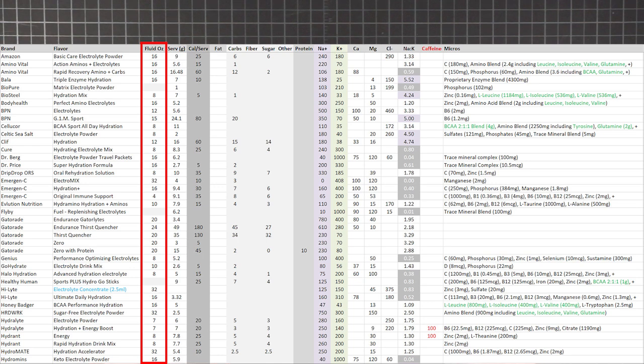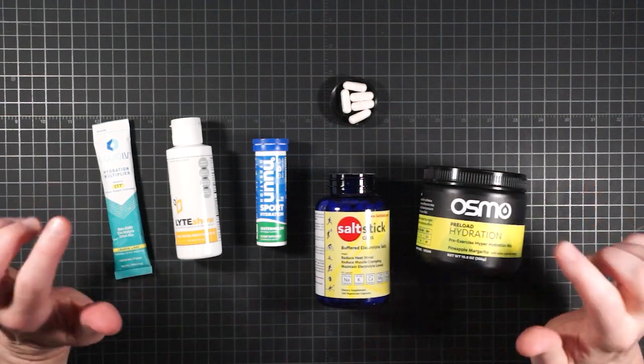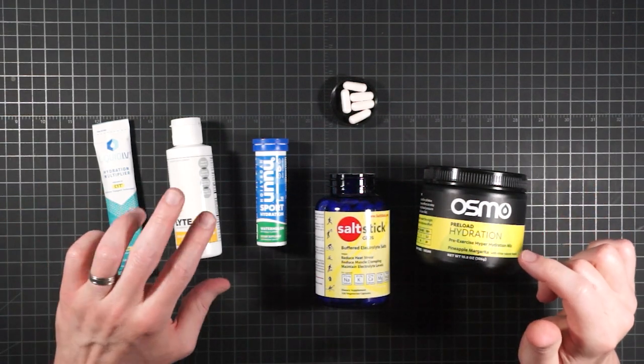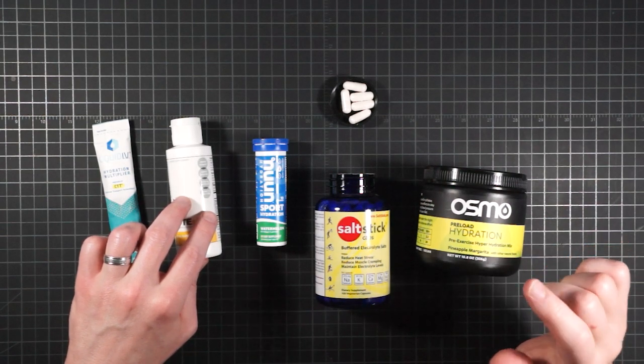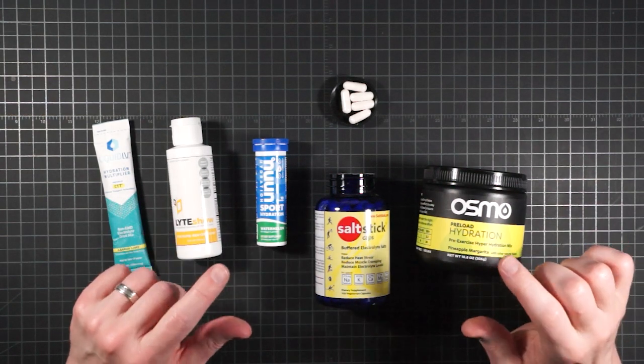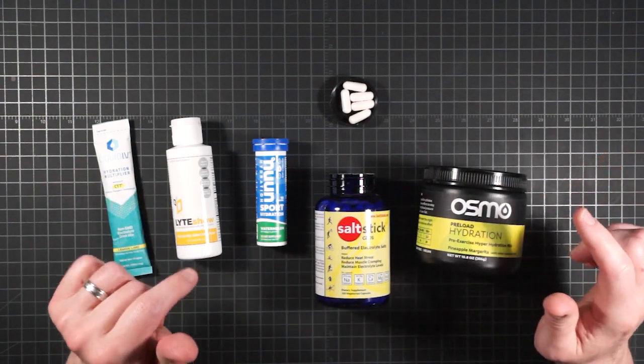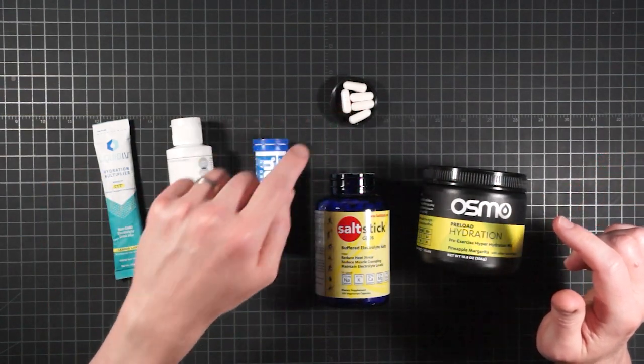The fluid ounces column is the amount of water recommended to make the mix in question. Most of these are powders for pouring into a water bottle and drinking. A few marked in blue are drops of liquid concentrate also for adding to water. Where there's a blank is either because the manufacturer did not specify or because the electrolyte in question is a capsule to be swallowed like a pill.